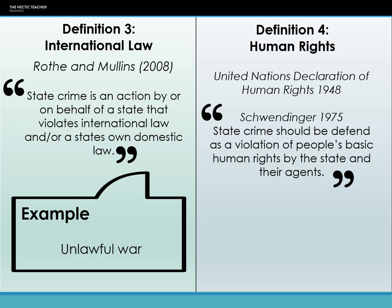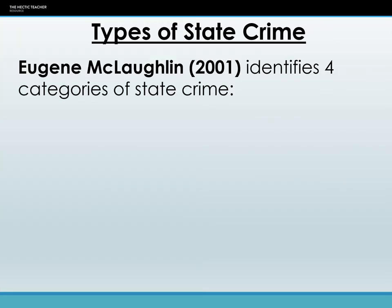Having five definitions of state crime makes it very difficult to enforce any act as a form of state crime, and we'll come back to how states get around this later in the lecture. Let's first look at types of state crime.